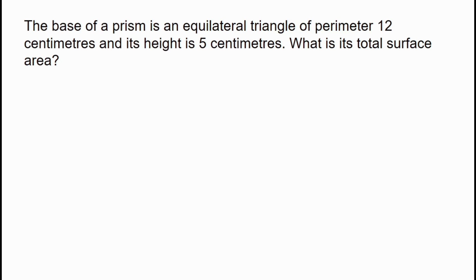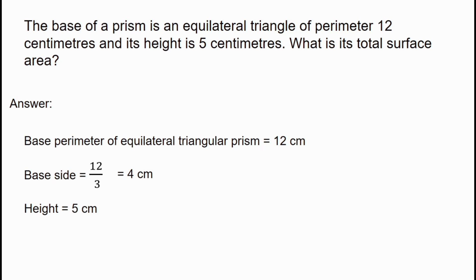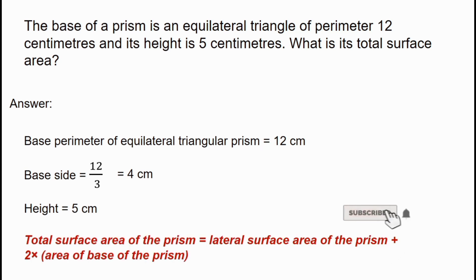We have to find the side from the perimeter. Since the perimeter is 12, each side of the equilateral triangle is equal to 4 centimeters. The total surface area of the prism is equal to the lateral surface area of the prism plus 2 times the area of the base of the prism.